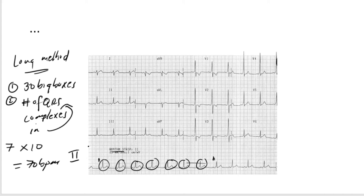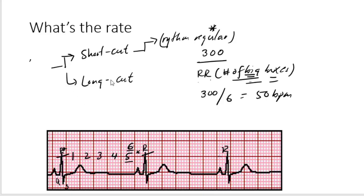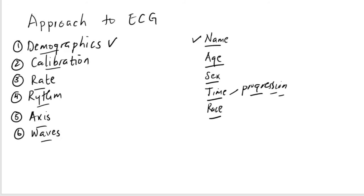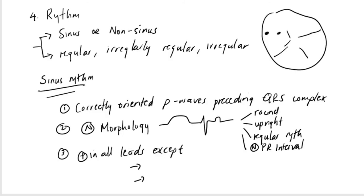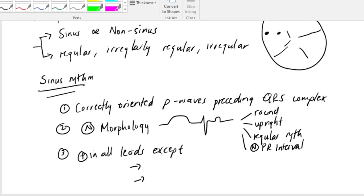You can pause this and repeat it. This is a very simple long method. It's useful especially if the rate is irregular, but you can use it whether it's regular or irregular. But the shortcut you can only use if the rhythm is regular. Now we've talked about calibration, we've talked about the rate, now we'll talk quickly about the rhythm.